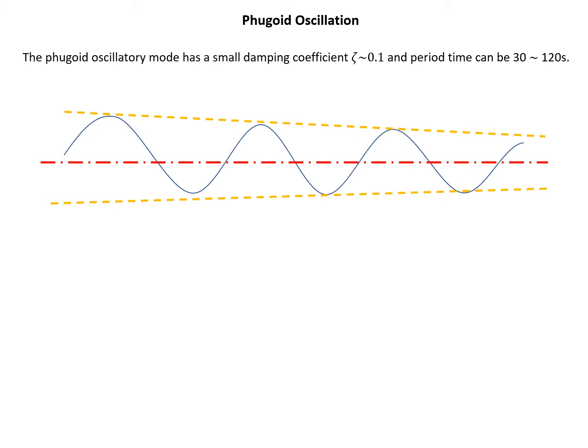Looking at the diagram of the phugoid mode, the curves show the trajectories of the aircraft, and they resemble a sinusoidal wave. We can see the amplitude damps very slowly, and this is because of the small damping coefficient.